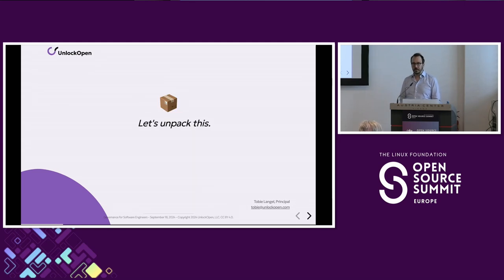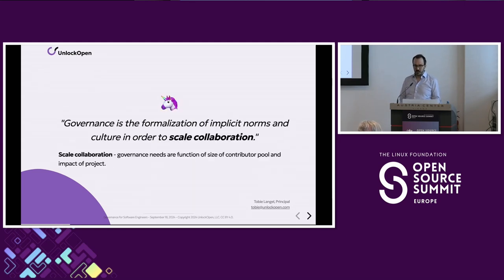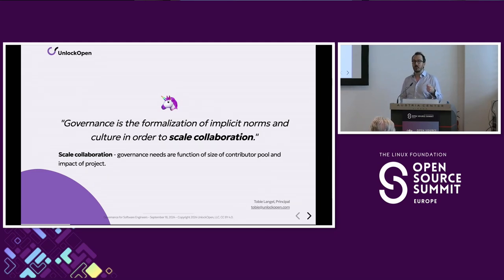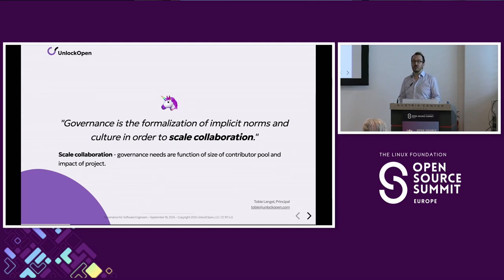Here's my working definition: governance is the formalization of implicit norms and culture in order to scale collaboration. Let's unpack this, starting from the end — scaling collaboration. Governance isn't something you have to think about when you're running your own open source project by yourself. It comes as an issue to tackle as a project grows beyond a few people working together, and increasingly as more people start depending on the open source project. The governance needs you're going to have are a function of the size of the contributor pool and the impact and reach of the project.